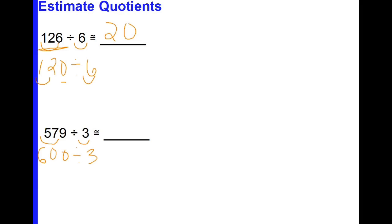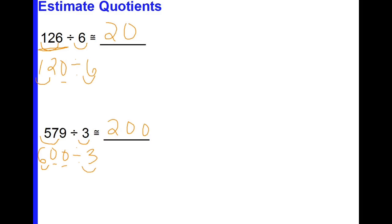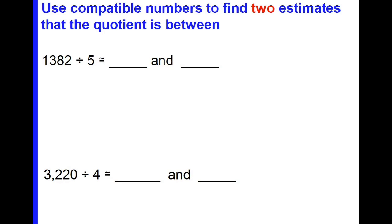I'm going to look at my basic facts: 6 divided by 3 is 2, and then I have these two zeros that I need to account for. So my estimated quotient is going to be 200. Now let's look at more work with estimating quotients.